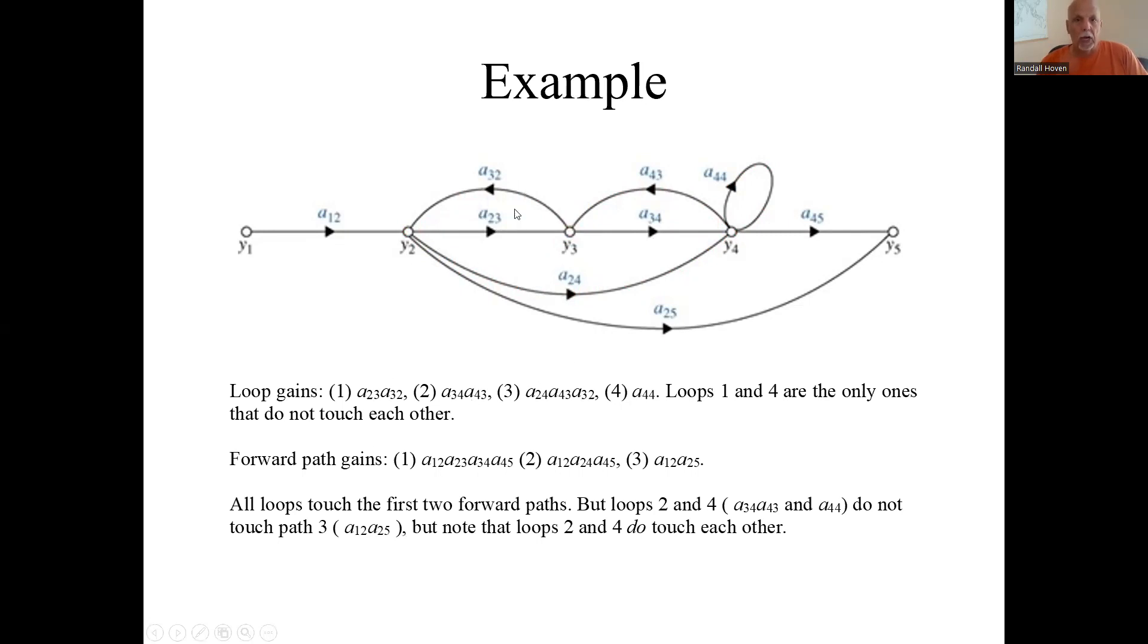And the loop gains are those products. And this guy will be A23, A32, A34, A43, A44, and then A24, A43, A32. There's the four loops and their gains. This loop here, this A44 gain loop here, does not touch this loop here, A23, A32. All the other loops touch each other. Of the four loops, those are the only two loops that do not touch each other.